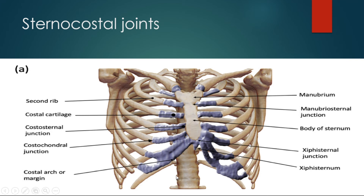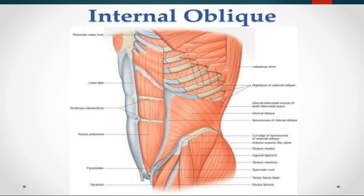The costal cartilages of ribs 8, 9, and 10 are articulated with one another, and these are also synovial joints. So all the costo-sternal joints and the inter-costal joints are synovial joints, except the first costo-sternal joint — the joint between the first rib and the manubrium — which is a cartilaginous joint. The cartilages of ribs 11 and 12 are embedded in the abdominal musculature.